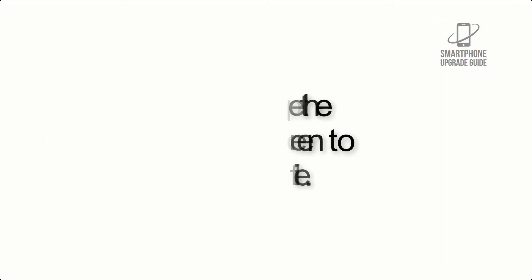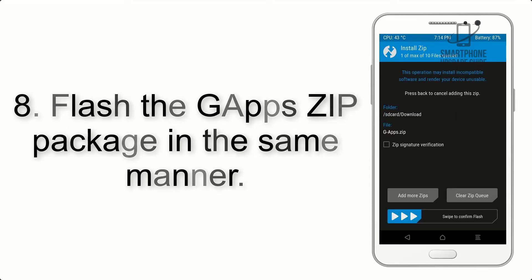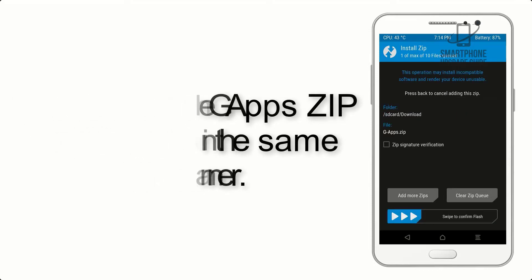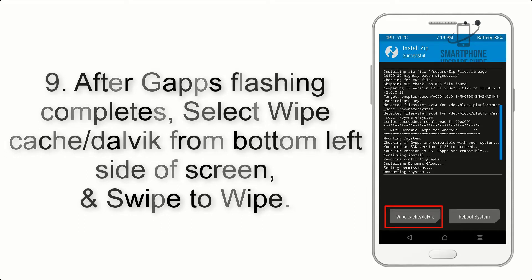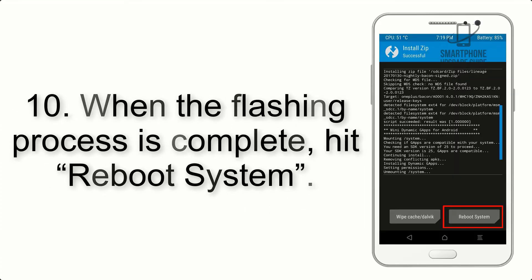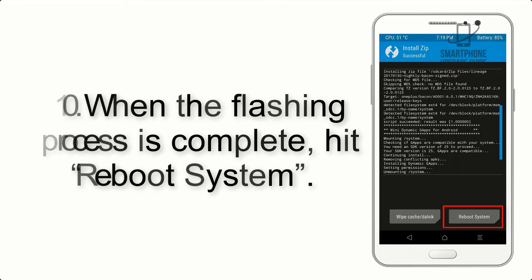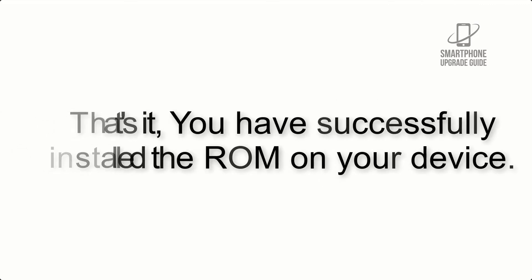Step 8: Flash the GApps zip package in the same manner. Step 9: After GApps flashing completes, select Wipe Cache and Dalvik from the bottom left side of the screen and swipe to wipe. Step 10: When the flashing process is complete, hit Reboot System. That's it — you have successfully installed the ROM on your device.